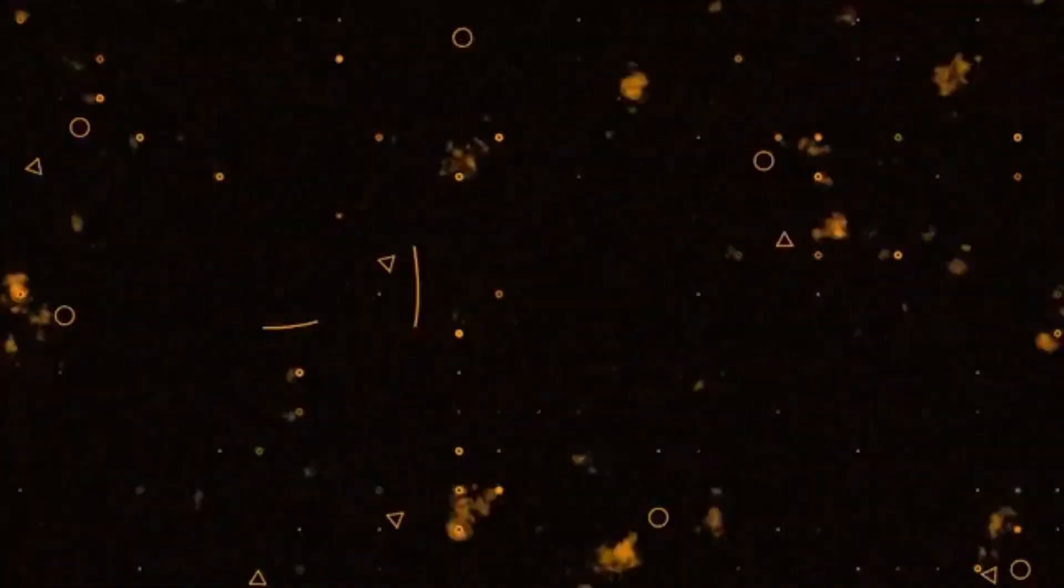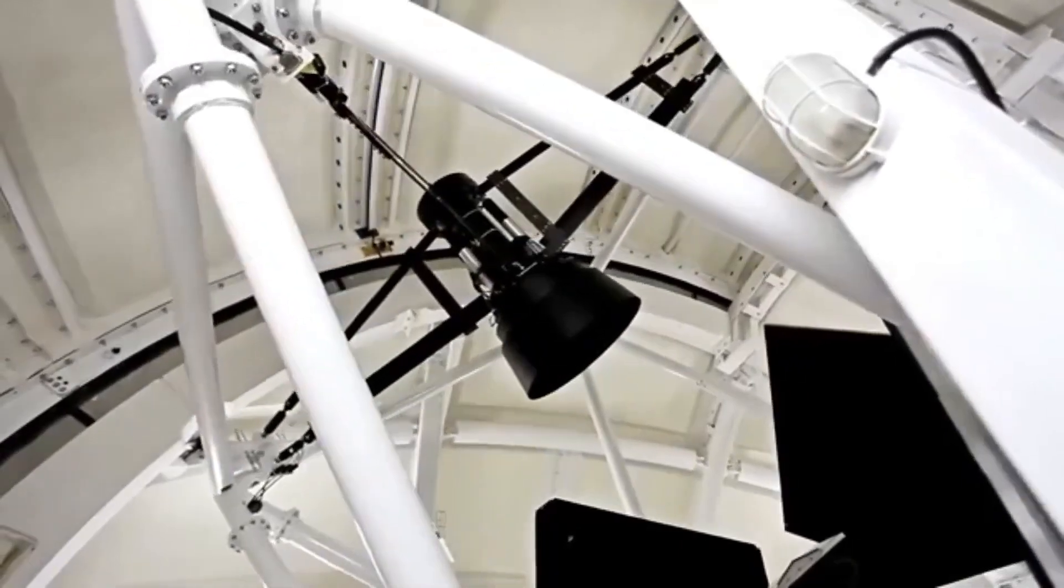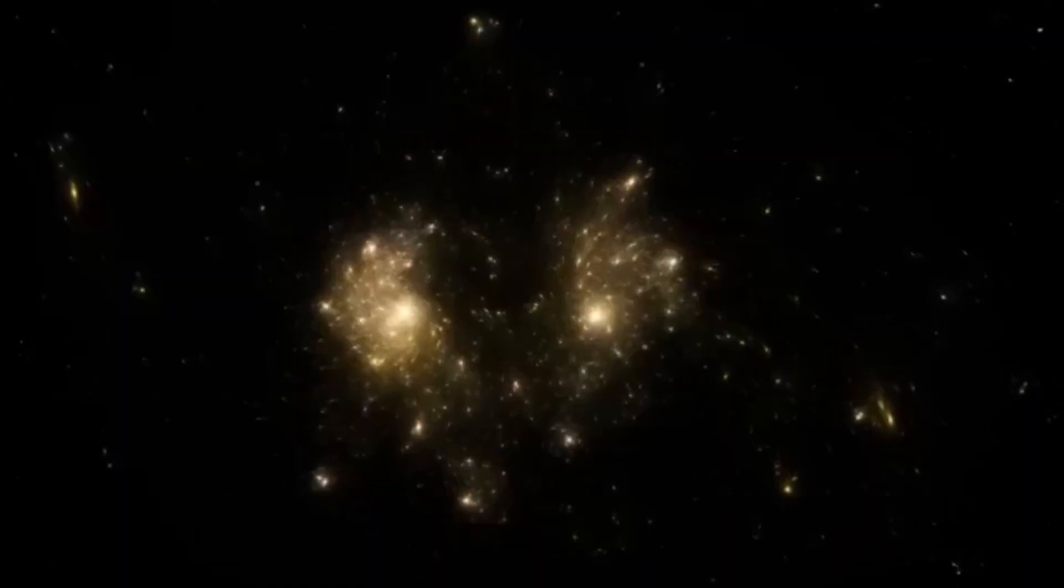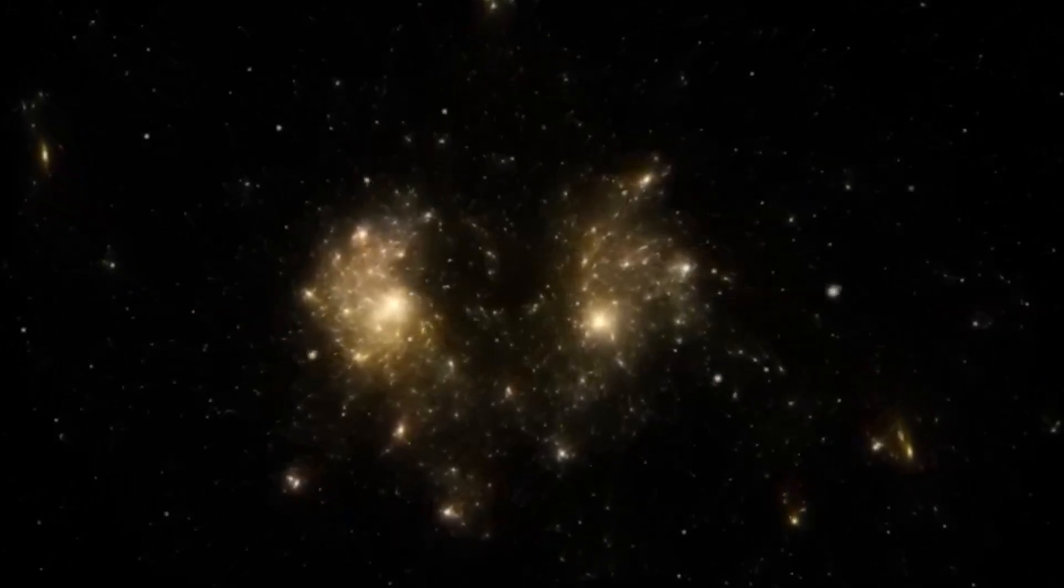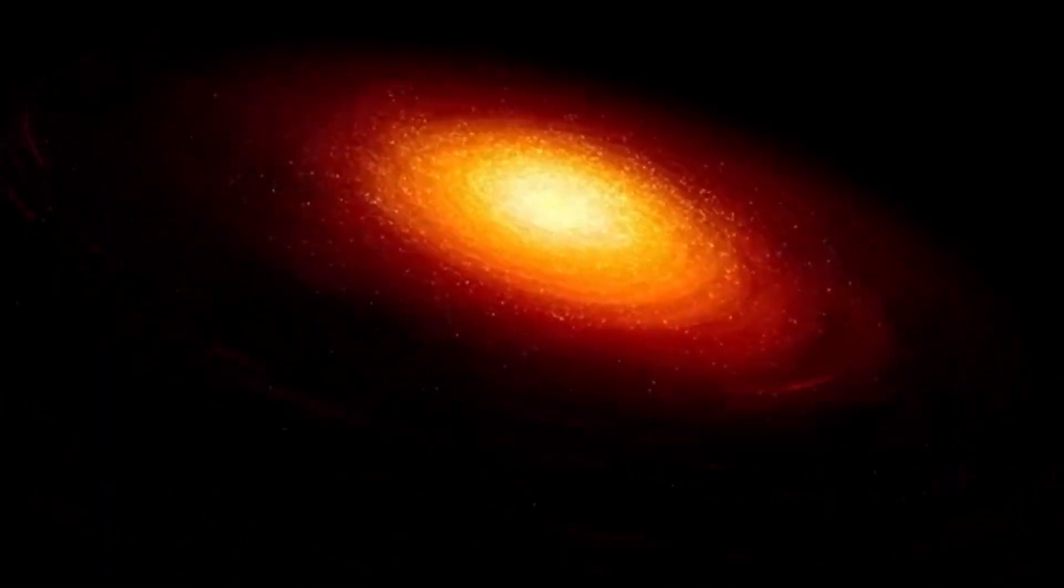Moving beyond galaxies, we encounter vast regions of space called cosmic voids. These are immense, mostly empty areas spanning hundreds of millions of light-years across. Though they appear barren, cosmic voids are thought to have the potential to give rise to new cosmic structures over time. Binding the universe together are cosmic filaments, enormous threads of gas, dust, and dark matter that stretch across billions of light-years. These filaments form a web-like structure that links galaxies and clusters into an intricate cosmic network.